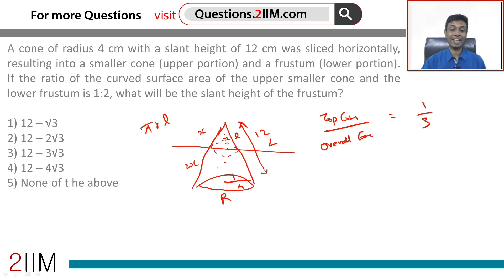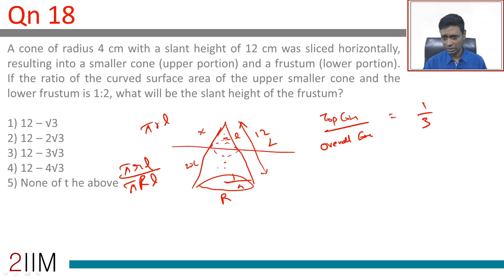In the area ratio, we're looking at πrl divided by πRL, which is 1:3. Remember, r and l are in the same ratio. All we need to do is figure out that ratio. So π gets cancelled, rl divided by RL is 1:3.